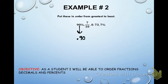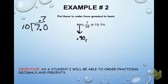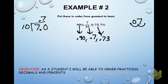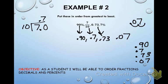Seven-tenths: divide 7 by 10 — add a decimal and a zero, 10 goes into 70 seven times, so that's 0.7. Note that 7/10 is also just read as 0.7. 0.73 is already a decimal. For 7%, take the percent off and move the decimal two places: that gives 0.07. Line them up: 0.90, 0.70, 0.73, and 0.07 — add a zero placeholder so each has the same number of decimal places.